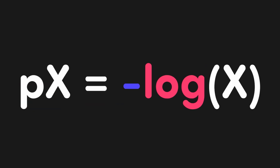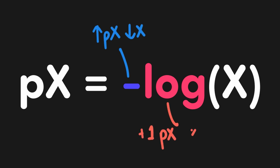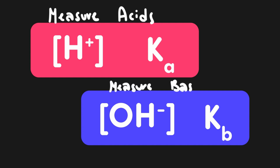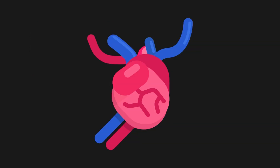In summary, all of the p-scale values can be grouped together because they are described by the same basic equation: px equals the negative log of x. The negative sign tells us there is an inverse relationship between px and x values, while the log means that as we shift one unit on the px scale, the x value changes by one factor of 10. We also learned that H+ concentration and Ka, as well as pH and pKa, all measure acidity, while hydroxide, Kb, pOH, and pKb are all measures of basicity. If you enjoyed this video and found it helpful, make sure to leave a like and subscribe for more MCAT tips and tricks.